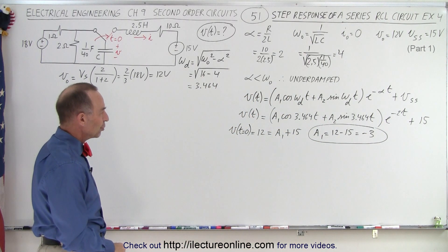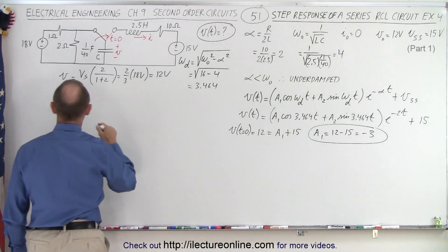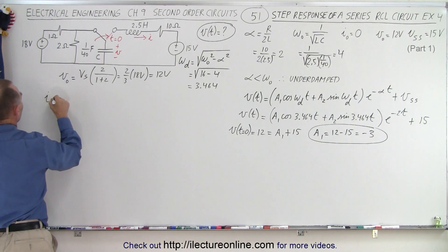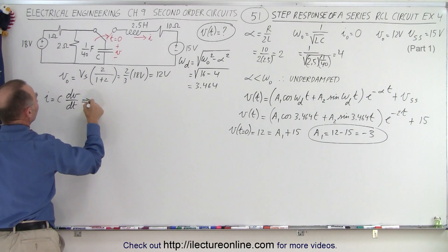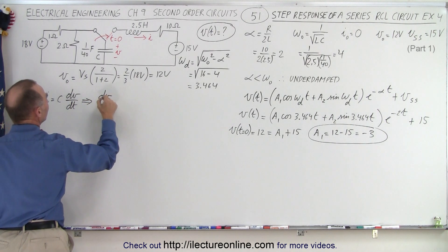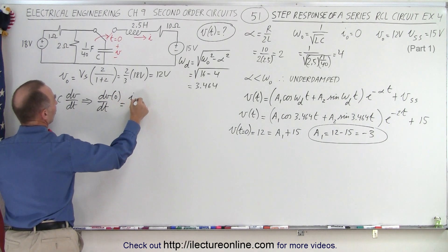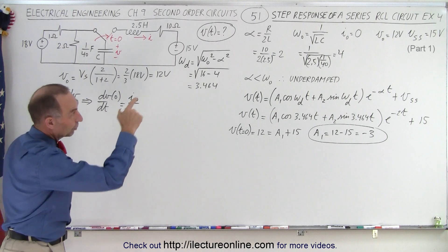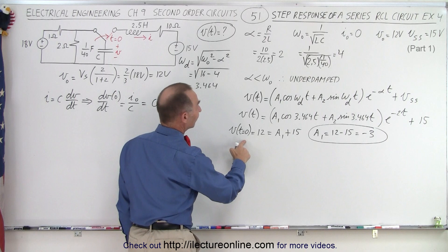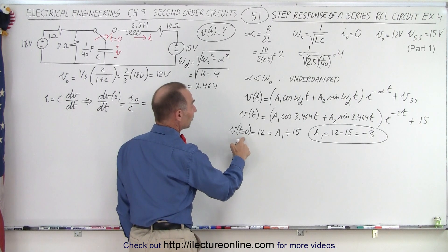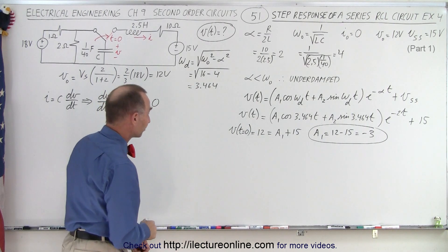To find a2, we take the derivative of the voltage equation, using the fact that current equals C times dv/dt. This implies that dv/dt at t = 0 equals the initial current divided by the capacitance. Since the initial current is zero, dv/dt at t = 0 equals zero. We can set the derivative of the voltage function equal to zero and solve for a2.